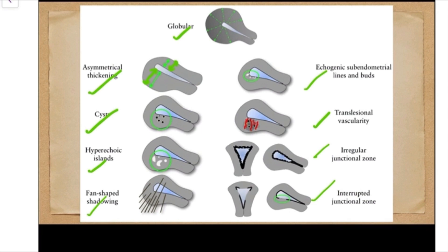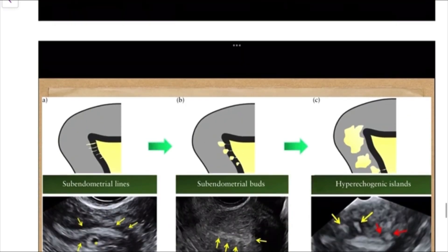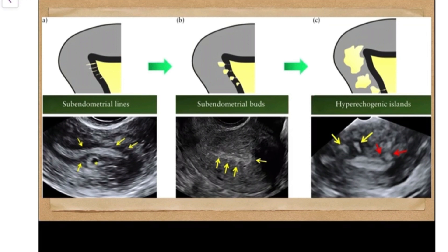By seeing these eight to nine features we are sure we are dealing with adenomyosis. For example, here we can see subendometrial echogenic lines, a cystic lesion with an echogenic rim (the myometrial cyst), echogenic buds, and hyperechoic islands — some of those islands also having a hypoechoic halo. This is a subendometrial bud with a subendometrial line. Seeing all these confirms adenomyosis.